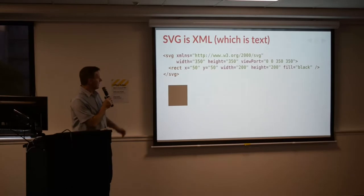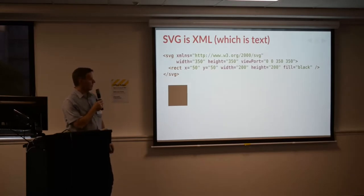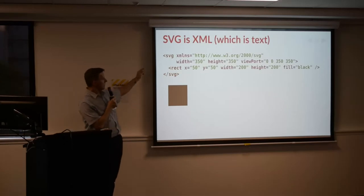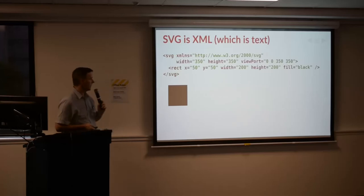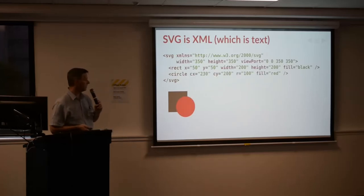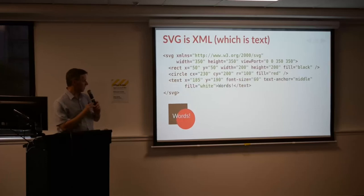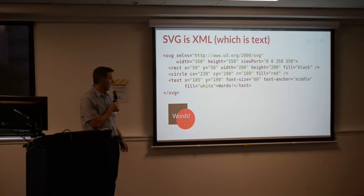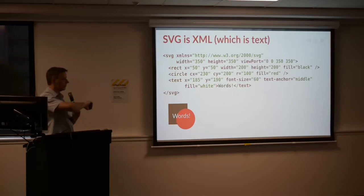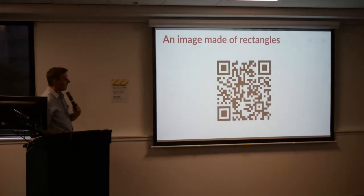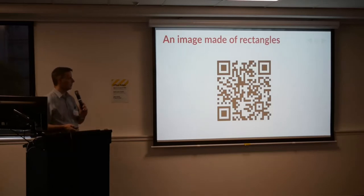SVG is an XML format. There's a rect tag for rectangle, a circle tag for circles and ellipses, a text tag for putting text in there, and then a path for arbitrary drawing — straight lines or curved lines with Bezier curves. All of that is possible. This is an example of an SVG image you can create using just the rect elements.